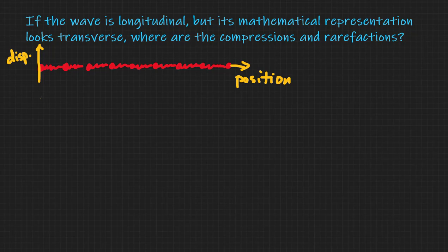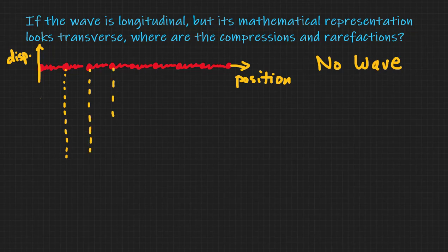And this is the case where there's no wave at all. All of these beads are in their equilibrium position, so they've all got zero displacement. Now, what I'm going to do is draw some vertical lines down here to remind us where these beads were in equilibrium.